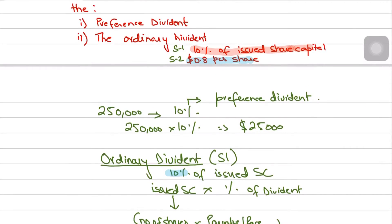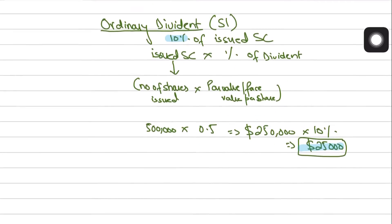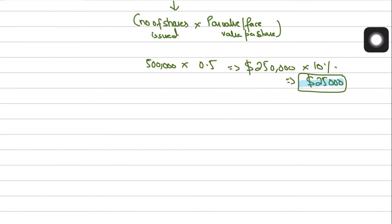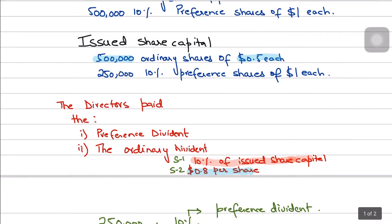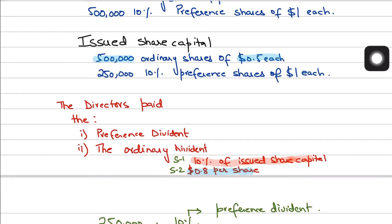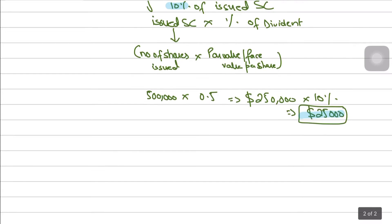In scenario 2, the dividend is $0.08 per share. Whenever dividend is calculated per share, you need to find the total number of shares issued. In this question it is clearly stated that there are 500,000 ordinary shares issued.